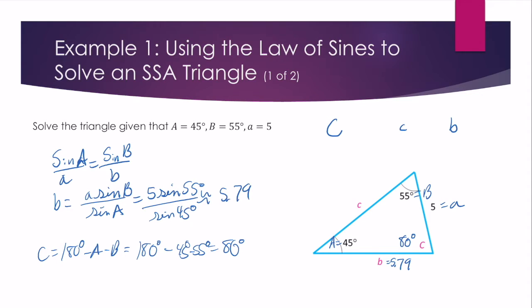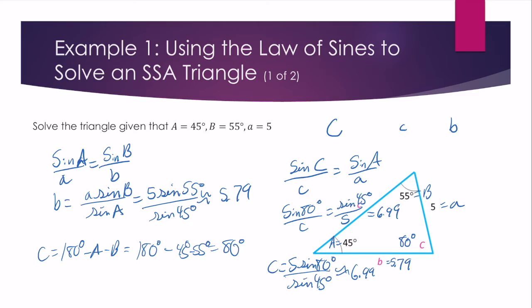The last thing I need to find is little c. So we can solve that by taking sine of C over c and setting that equivalent to sine of A over a or sine of B over b. I did A. So sine of 80 degrees over c is sine of 45 degrees over 5. So I would get that c is 5 sine of 80 degrees over the sine of 45 degrees, which is about 6.99. So I found my last side length, and I have officially solved this side angle angle triangle.